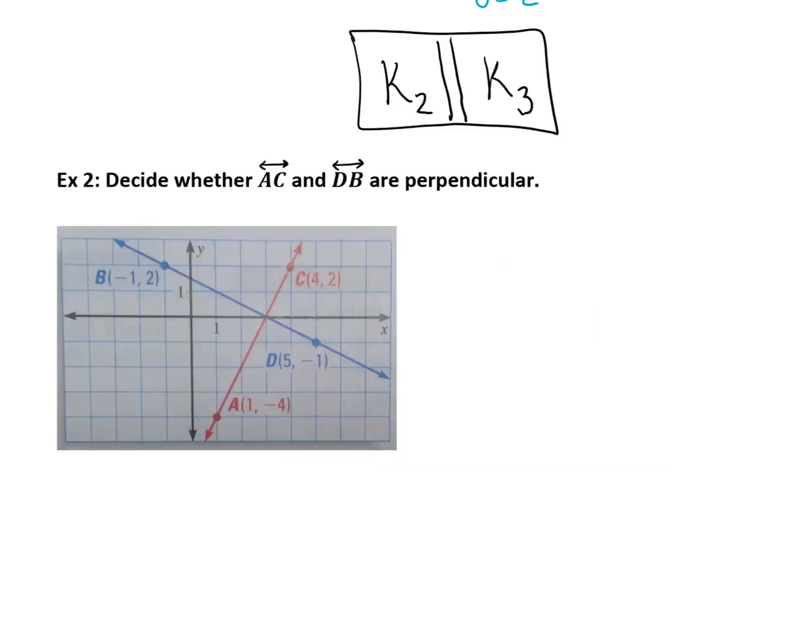Let's look at another example. This time we're going to determine if the lines are perpendicular to one another by calculating their slopes and then comparing. So first if you calculate the slope of the red line, ac, you'll get a slope of positive 2.